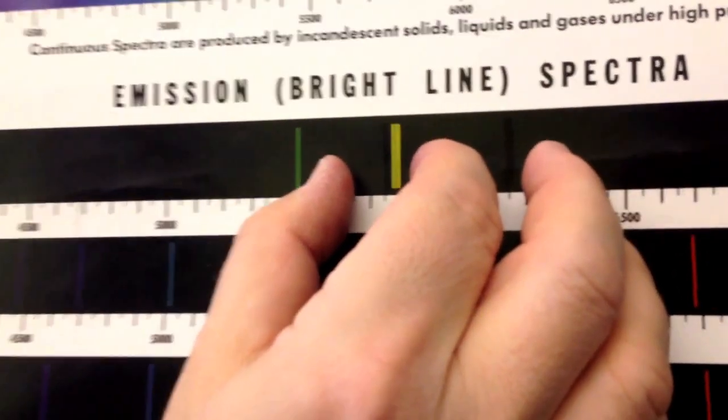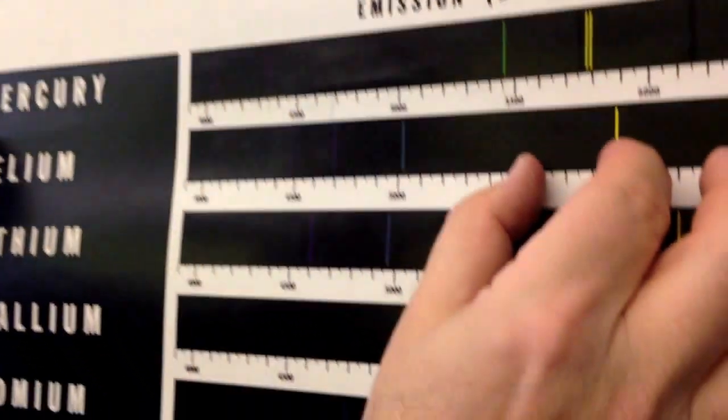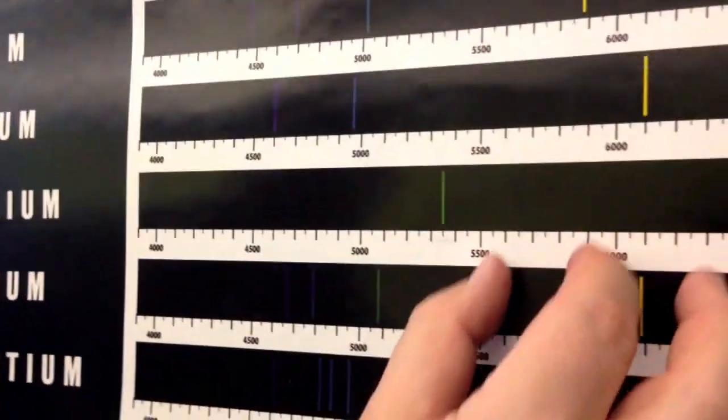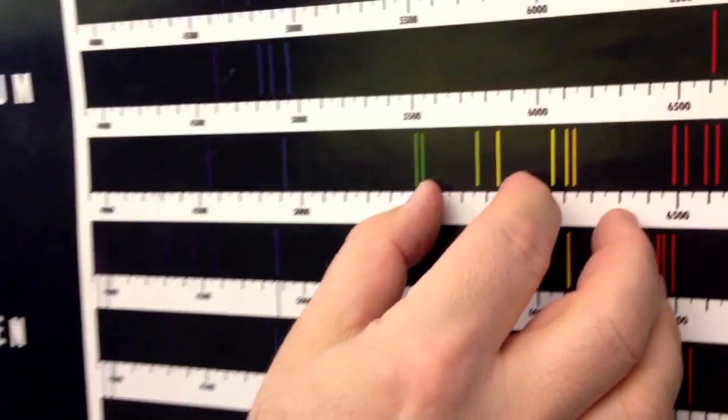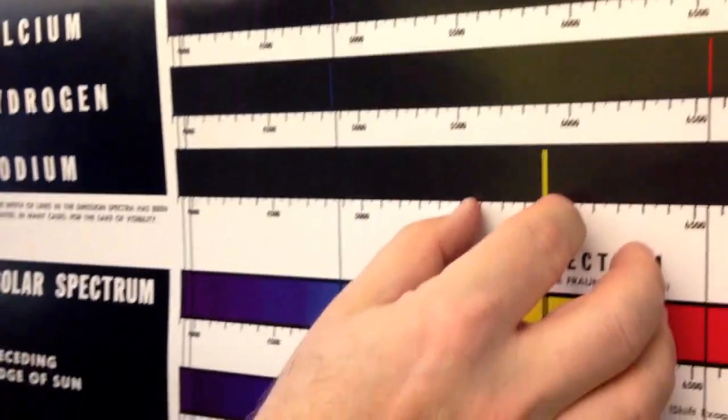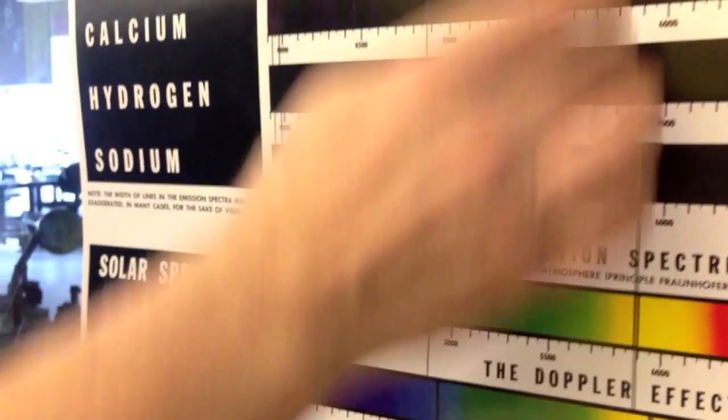...it could be mercury, could be helium, could be barium, and it could be sodium. So we've already narrowed it down to four different gases.